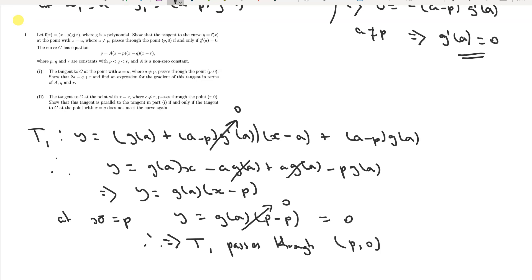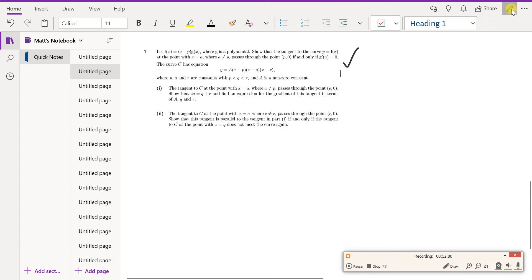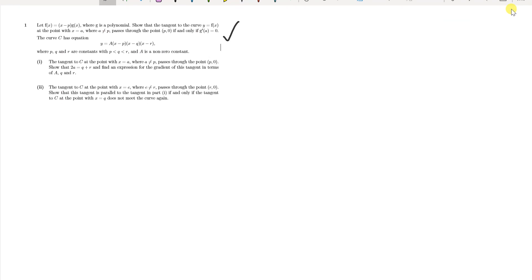We've proved it both ways and that completes the first part of the question. Now it's time to move on to part 1, which uses the result we just established. Part 1 talks about curve C with a specific equation where p, q, and r are constants with p < q < r, and a is a non-zero constant.